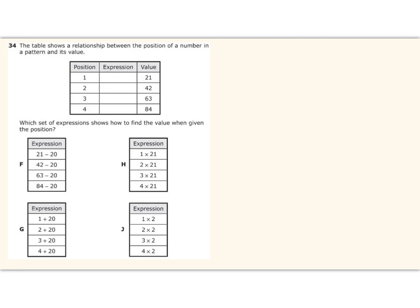So my first value is 21, my second value is 42, my third value is 63, my fourth value is 84. And how can I describe the relationship between the position and the value? Well I have a three-column process chart and so here the missing column is the middle one, the one that tells me how I get from the position to the value. In this example we're looking at a multiplicative relationship and the answer choice is H.